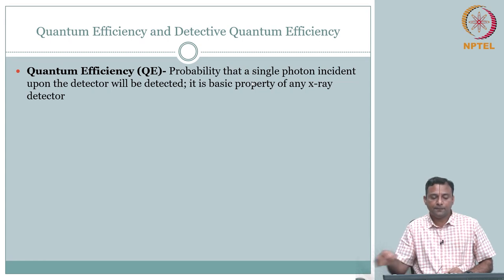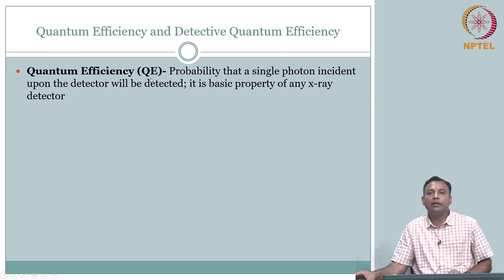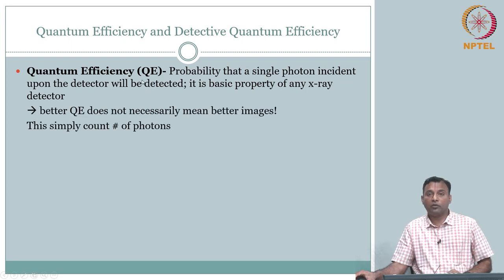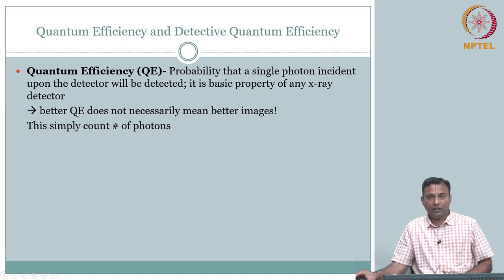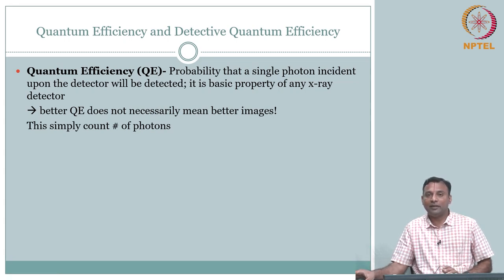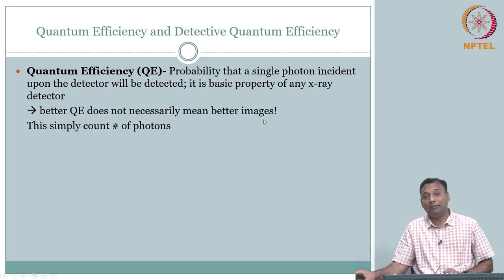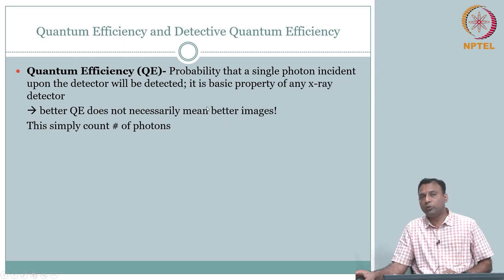Quantum efficiency is the probability that a single photon incident upon the detector will be detected — meaning it will interact with the material. It is a basic property of any x-ray detector. But does a better QE numerically necessarily mean better images? Better QE does not necessarily mean better images. If you have two detectors with the same QE but one converts and localizes photons with less randomness than the other, intuitively you want the one with less fluctuation.